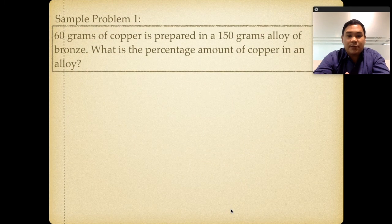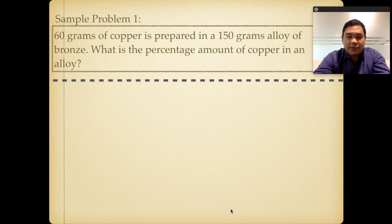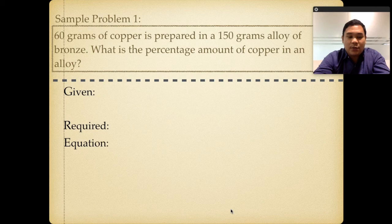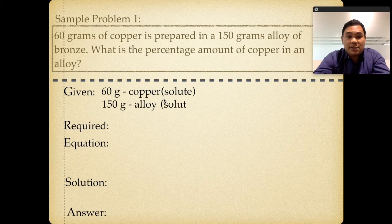Sample problem number 1: 60 grams of copper is prepared in a 150-gram alloy of bronze. What is the percentage amount of copper in the alloy? Using the GRESSA format — given, required, equation, solution, answer — the given is 60 grams of copper, which is the solute, and 150 grams of alloy, which is the solution, not the solvent.